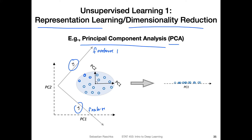We have these two principal components, which are essentially eigenvectors. Usually we sort them in decreasing order by their corresponding eigenvalues, so we keep the eigenvectors corresponding to the large eigenvalues. In this case, the eigenvalue corresponding to the first principal component is larger than the second one, so in a practical application we may use this first principal component to have a compressed representation of our data. This is a bit more detail than we strictly need to know — I just wanted to show an example of unsupervised learning.